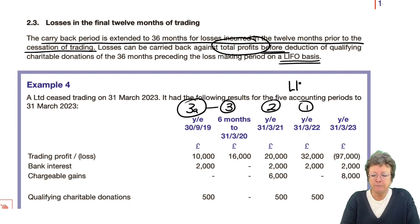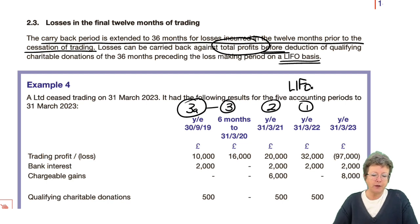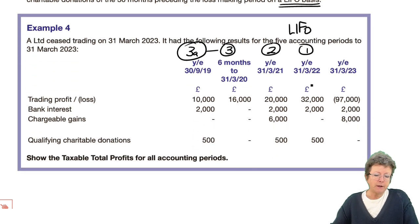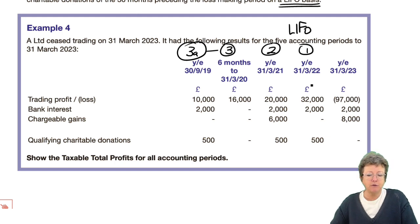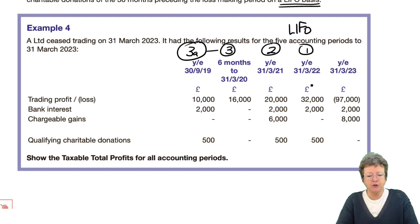So it's last in, first out rather than first in, first out. We have an example here of a company that ceased to trade, with results for the five accounting periods up to the 31st of March 2023 when they ceased. You'll notice we've got years across the top and the pro forma down the side.